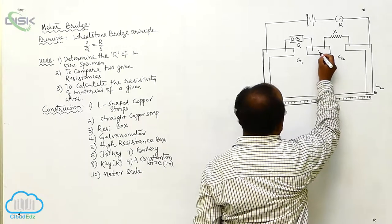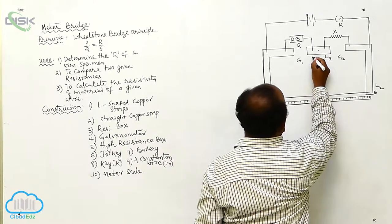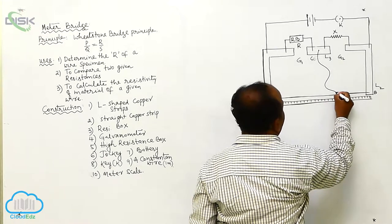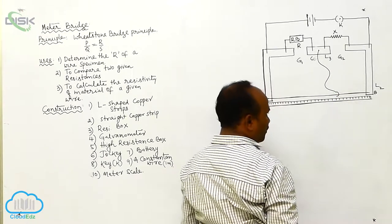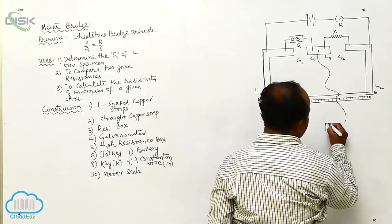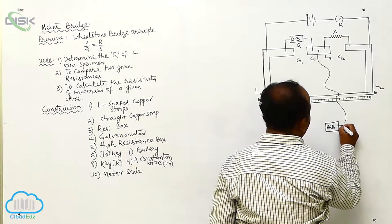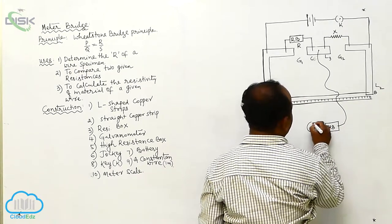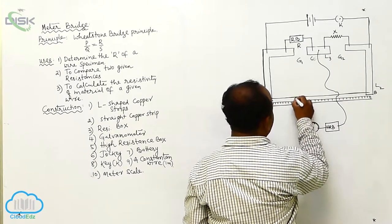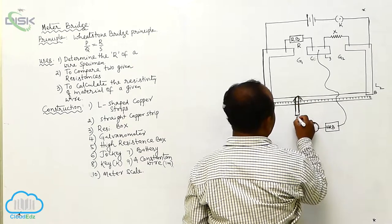From the midpoint of the flat metal strip, a wire connects to a high resistance box, a galvanometer, and a jockey — these three are connected in series. The jockey is able to slide along the wire. The jockey may be placed at different positions along the wire to complete the circuit.